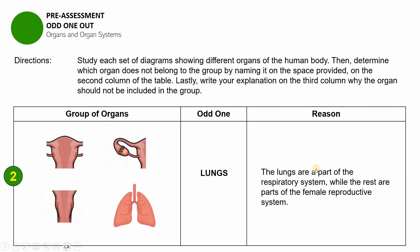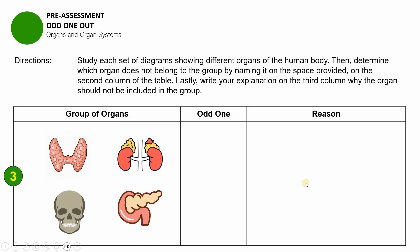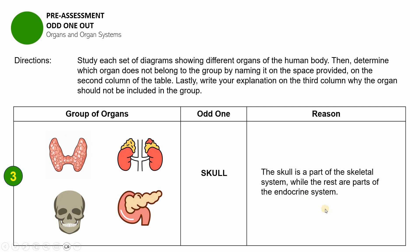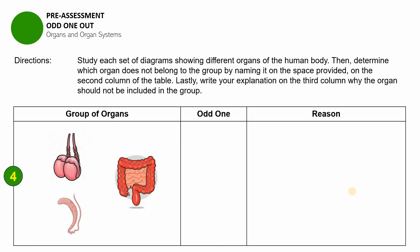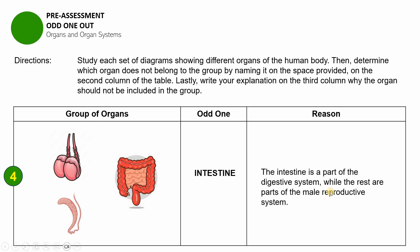The next item has the following group. The odd one is the skull, because the skull is part of the skeletal system, while the thyroid gland, adrenal gland, and pancreas are all major parts of the endocrine system. For the last group, the odd one is the intestine. The reason is that the intestine is part of the digestive system, while the rest are parts of the male reproductive system.